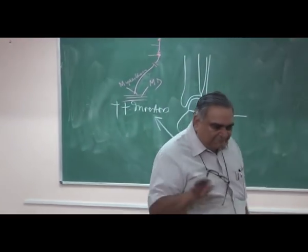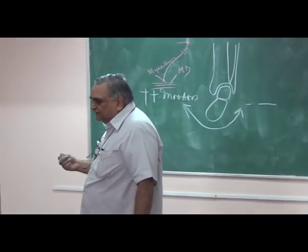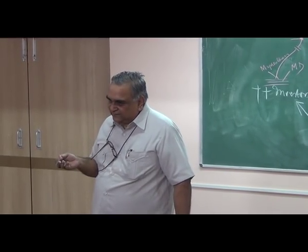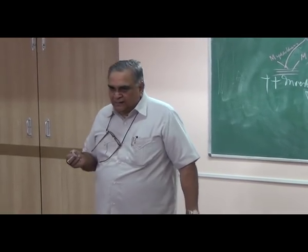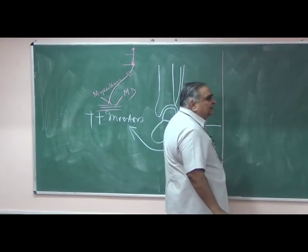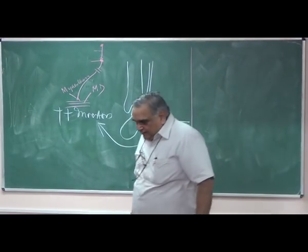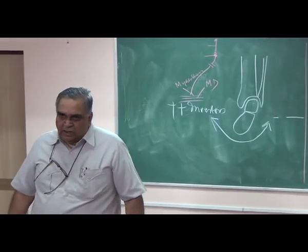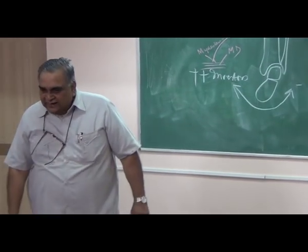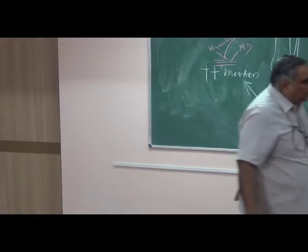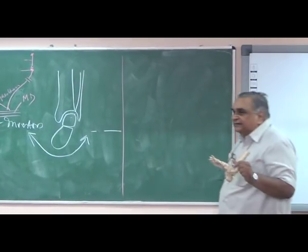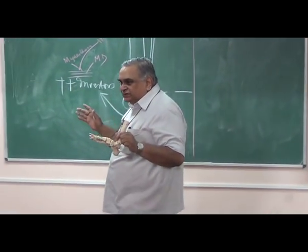So now you have understood the patho-anatomy, the cause of acquired CTEV, and when you call it congenital CTEV. Management: correct CTEV as soon as possible by manipulation. The crucial thing in manipulation is the sequence of correction: adduction first, then inversion, then equinus. You put pressure on the first metatarsal, correct the adduction.